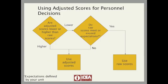This decision flowchart can help you decide when to use raw scores and when to use adjusted scores. If your adjusted scores are higher than your raw scores, we recommend you use the adjusted scores. This means that you had negative contextual circumstances outside your control that impacted your ratings. If your adjusted scores go down, you should ask an important question: do your raw scores meet or exceed the expectations that were set by your unit? If so, it would be reasonable to use the raw scores.